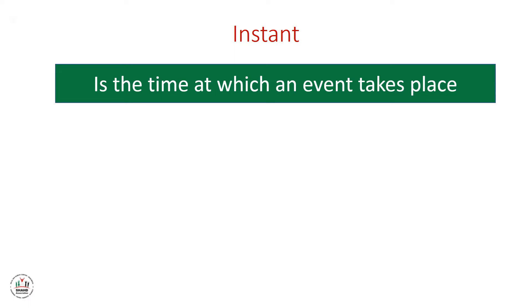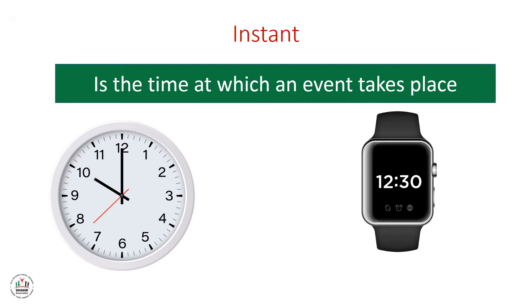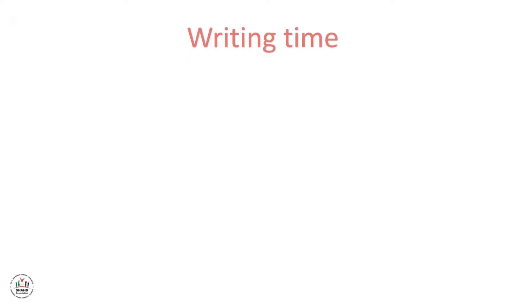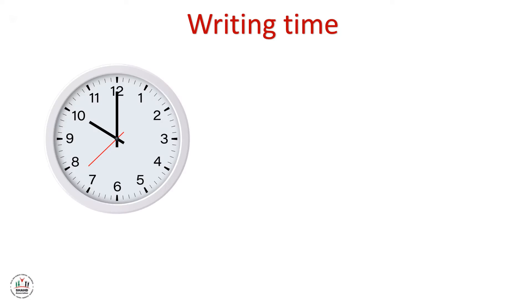We have two different types of watches: the analog watch and the digital watch. We will focus on the analog watch. In this watch we have three indicators: the short one is for the hours, the longer one is for the minutes, and the final red one is for the seconds.